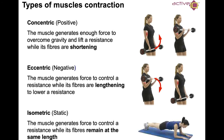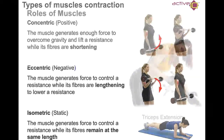And then we have isometric — the muscles generate force to control the resistance while the fibers remain at the same length. A good example of this is performing a plank.